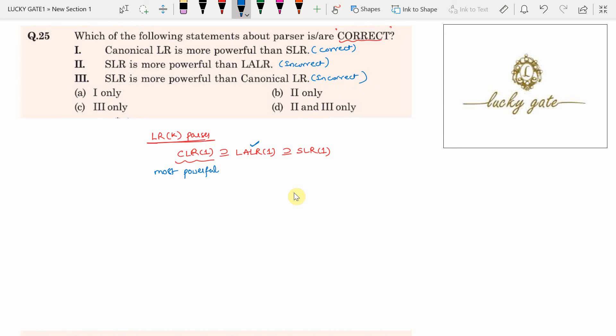Why? Because when you look at the relation among these three parsers, SLR of 1 is in the center, and outside we have LALR of 1.